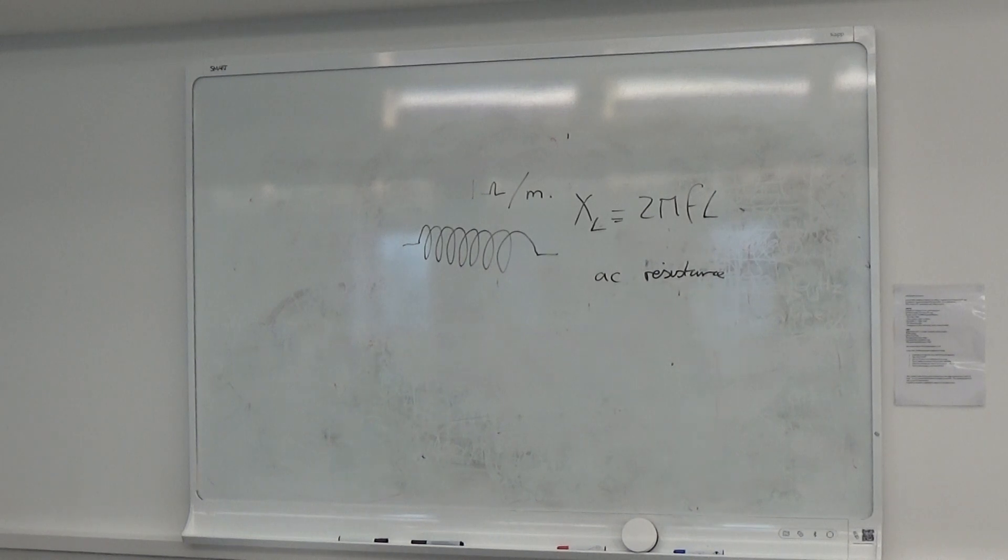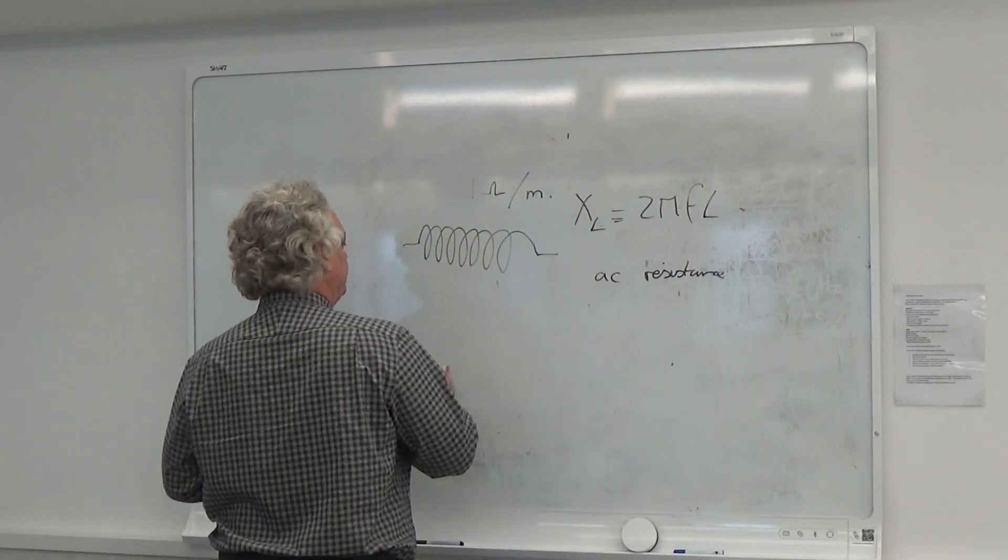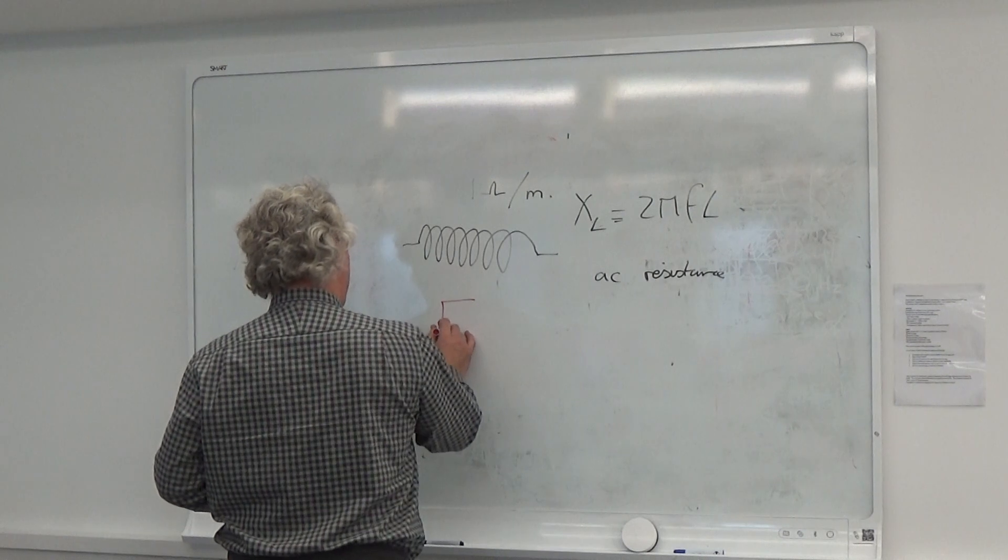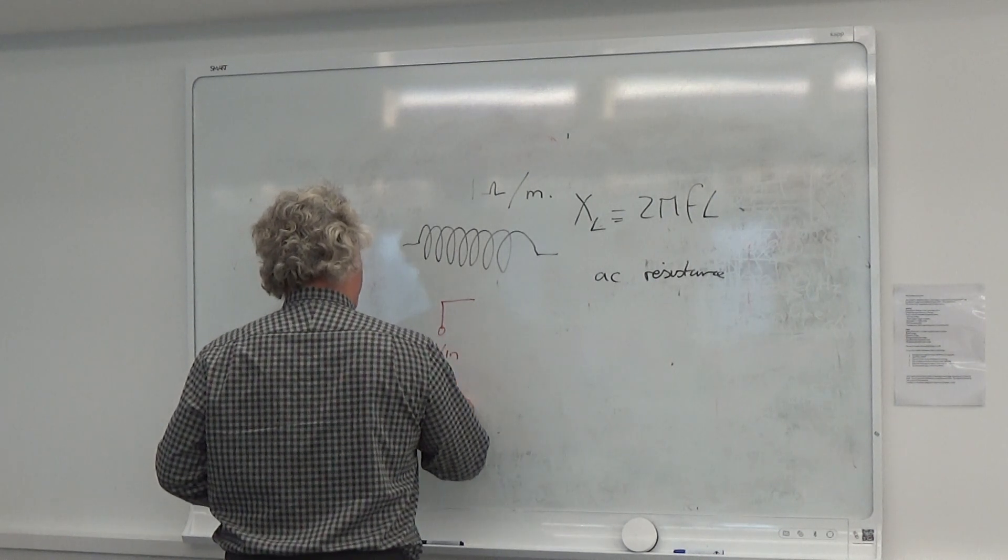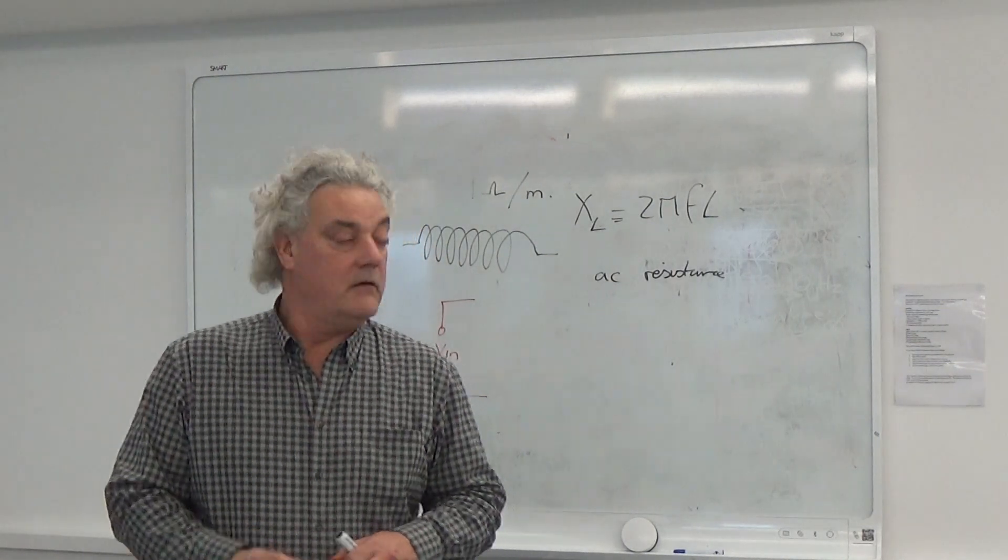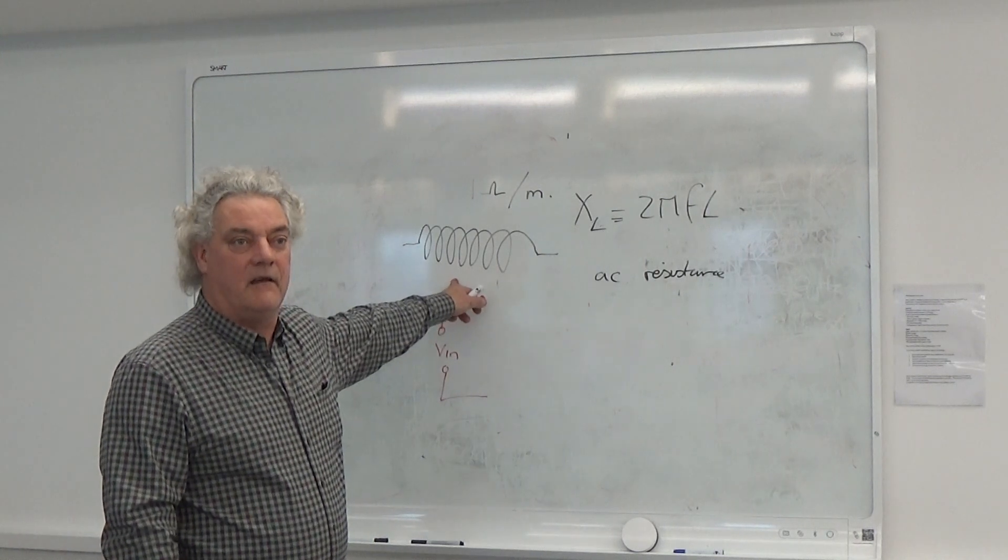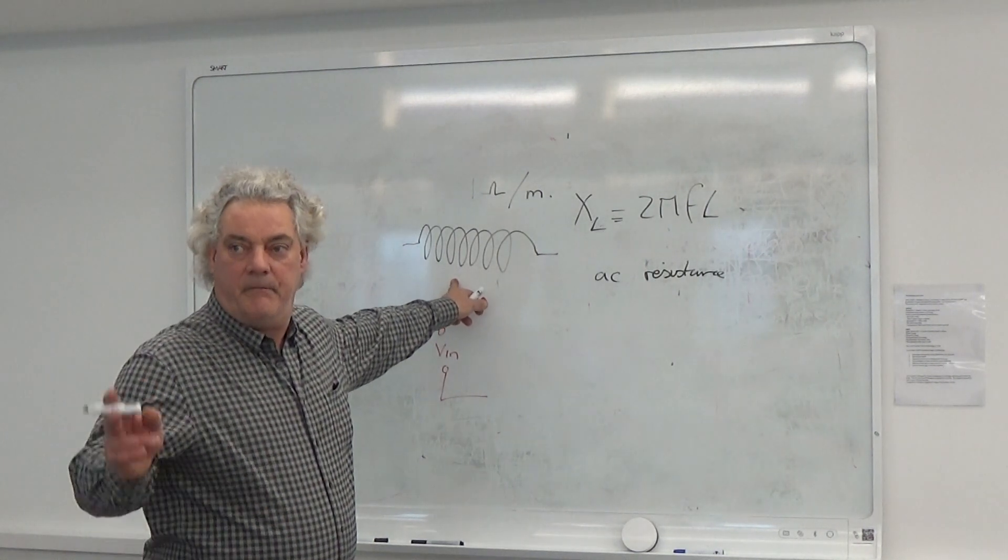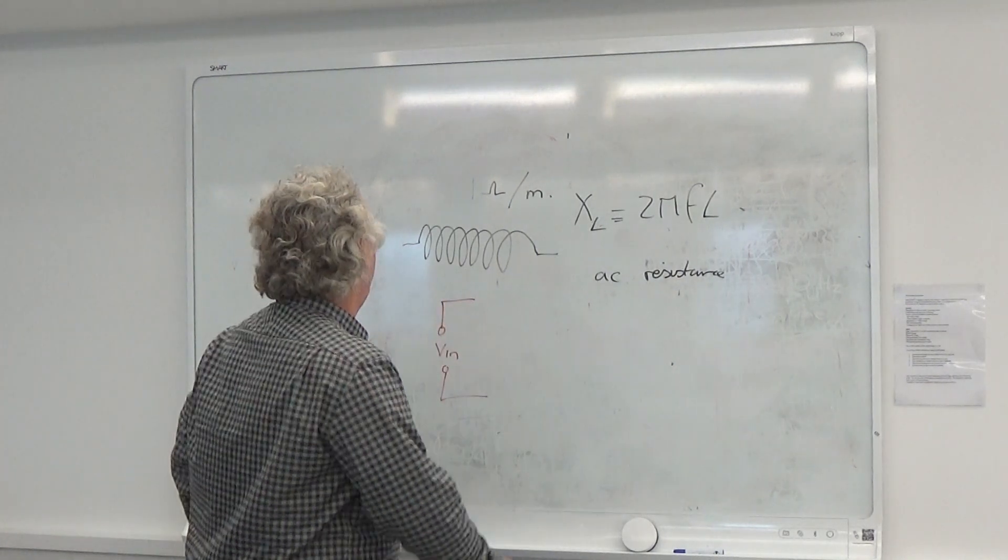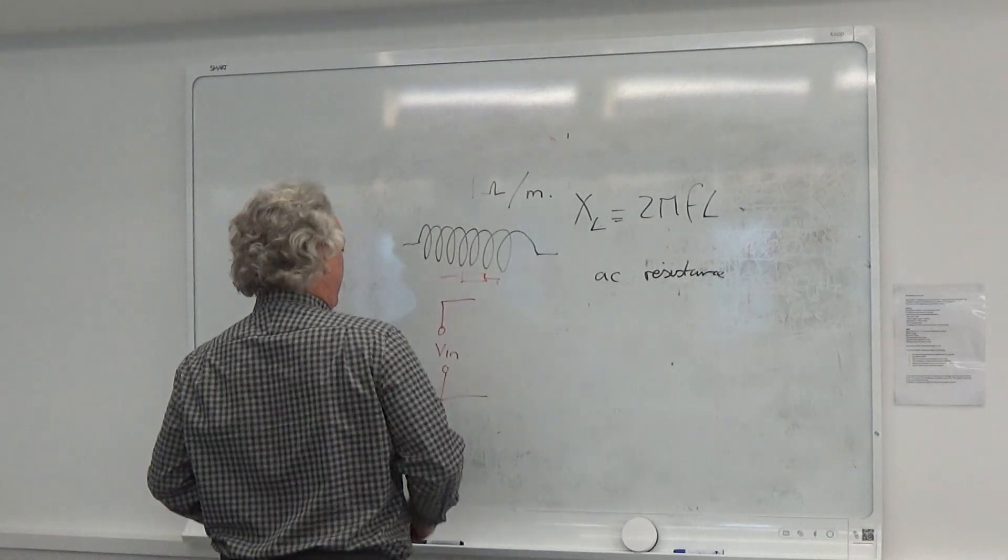So, what would you expect to happen if I did this? So, the same circuit as I had before, so I've got V in. Remember, we're talking AC. If we were talking DC, what would this look like to DC? Well, it would be a one ohm resistor, wouldn't it? Because we said it's got one ohm per metre, but it would just be a straight piece of wire. So, that would just be equivalent to a small resistor like that.